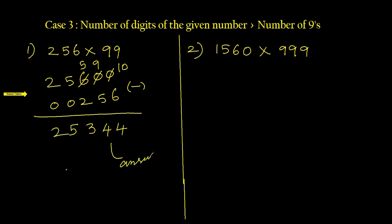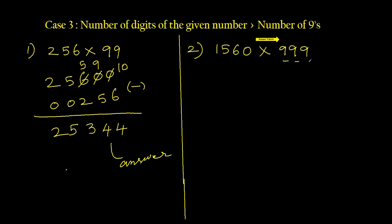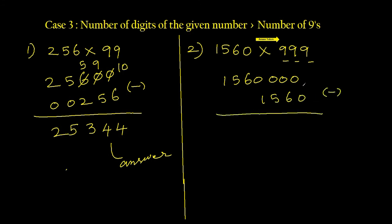Same method for 1560 times 999. The next multiple of 10 closest to 999 is 1000, so add three zeros: 1560000. Now take away 1560. Working through the subtraction: 0 minus 0 is 0, 10 minus 6 is 4, 9 minus 5 is 4, 9 minus 1 is 8, remaining digits give 1558440. Such a big answer found in two seconds.